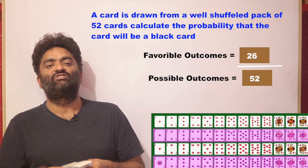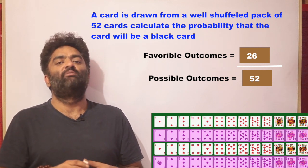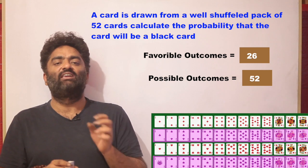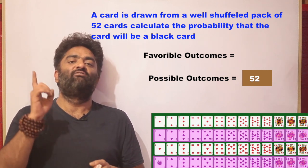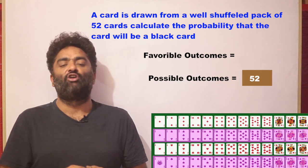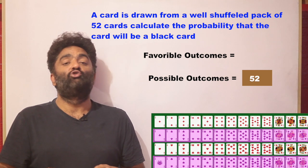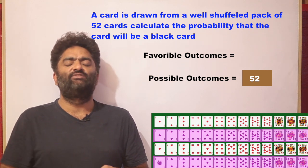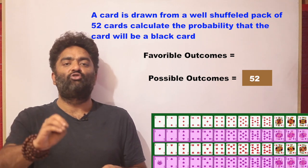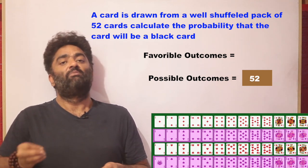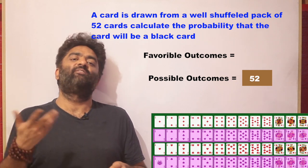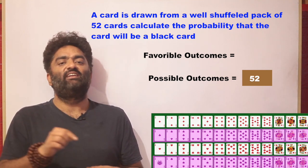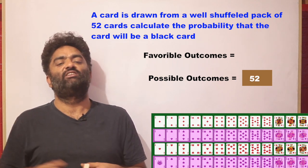You can try out more questions with a pack of cards — probability of a black number card, a face card, a black king, etc. Remember: if you are drawing one card, your answer will always have 52 in the denominator. If you were to draw two cards, the denominator would be 52 × 51, also written as 52C2. These ideas are part of counting theory — permutations and combinations.